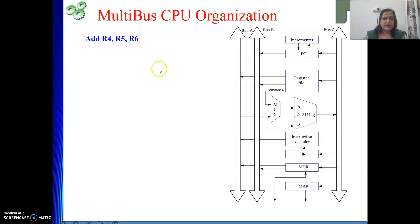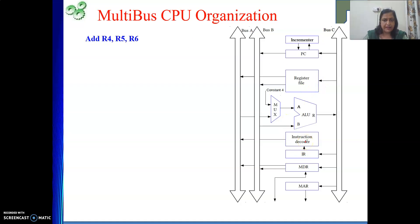The point is the instruction itself is initially stored in memory. From memory, we need to get the instruction inside our IR. Then only it will be decoded and the next set of actions will be decided. So our first job is to fetch the instruction.